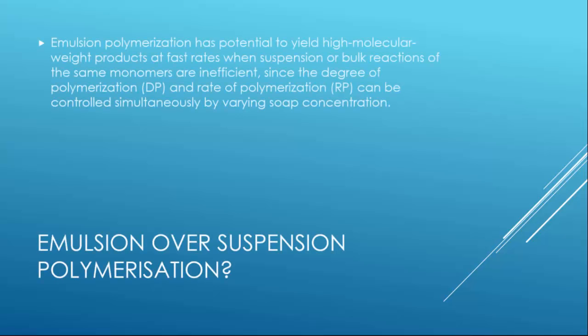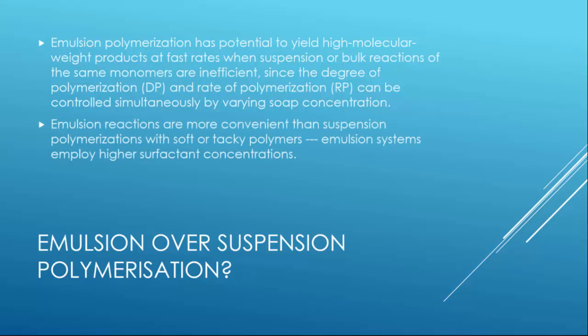So why is emulsion polymerization used over suspension polymerization? Because there must be some advantage associated with this emulsion polymerization. We know that emulsion polymerization has the potential to yield high molecular weight products at a faster rate when suspension or bulk reactions of the same monomer are inefficient, because the degree of polymerization, DP, and the rate of polymerization, RP, can be controlled simultaneously by varying the soap concentration, the surfactant here.